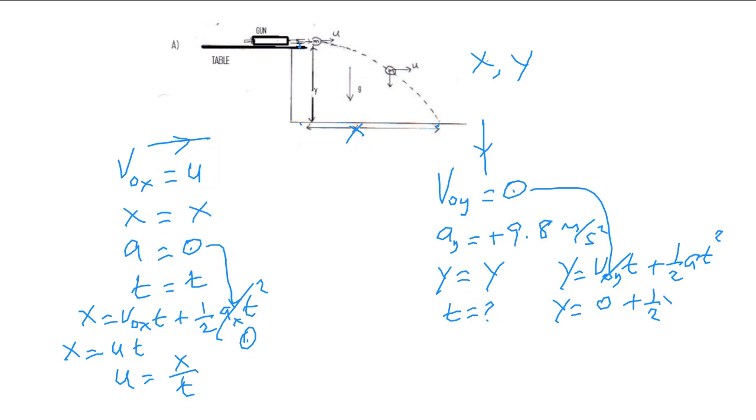This means Y is one half times 9.8 which will be 4.9 T squared. So that's T squared. That means T squared is going to be Y divided by 4.9. So you can find T simply by taking a square root.